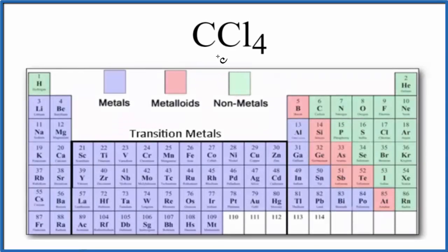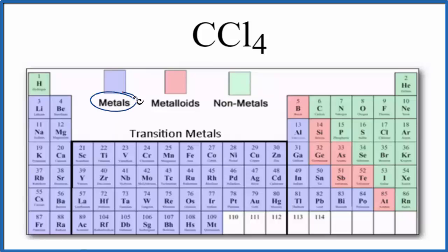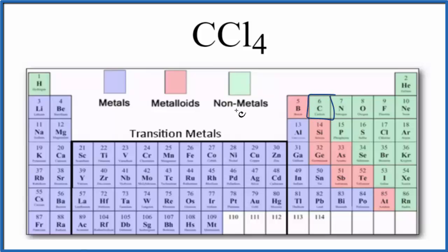The question is whether CCl4 is ionic or covalent. This is carbon tetrachloride. On the periodic table, we have it divided into metals, metalloids, and nonmetals. We find carbon right here — carbon is a nonmetal. And then chlorine over here — chlorine is also a nonmetal.